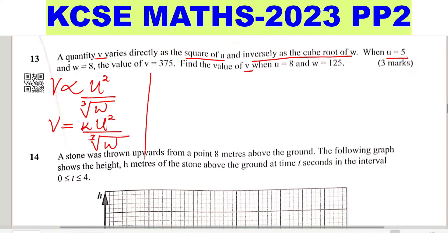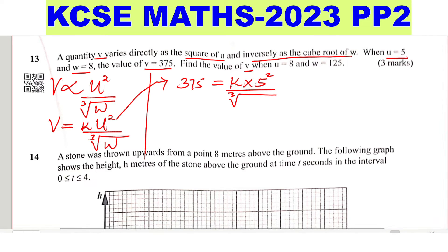When U equals 5 and W equals 8, the value of V equals 375. So let us substitute this. V equals 375, then constant multiply by U is 5, so that would be 5 squared, then divided by the cube root of W, which is 8.